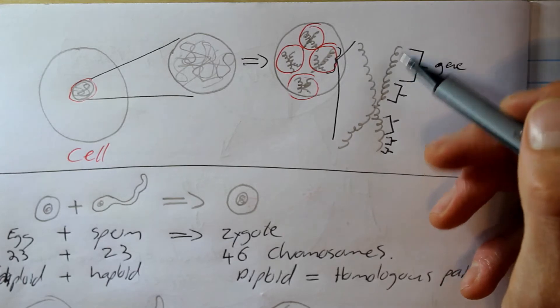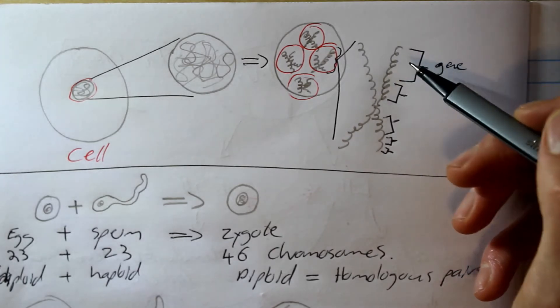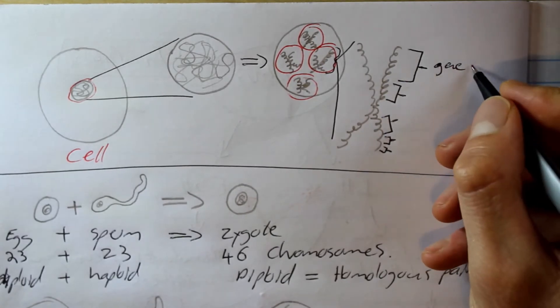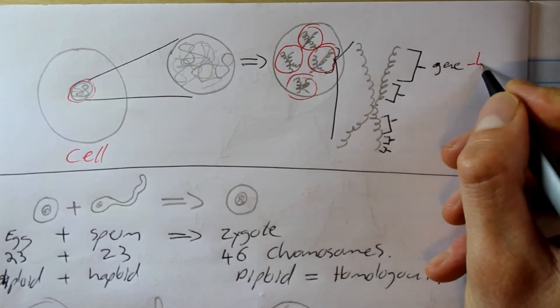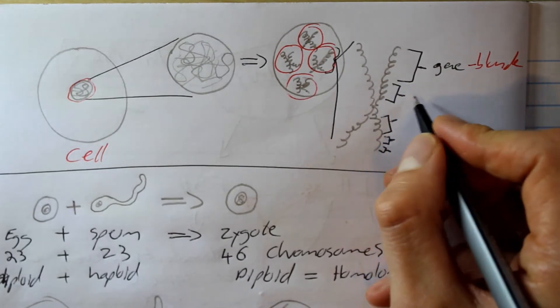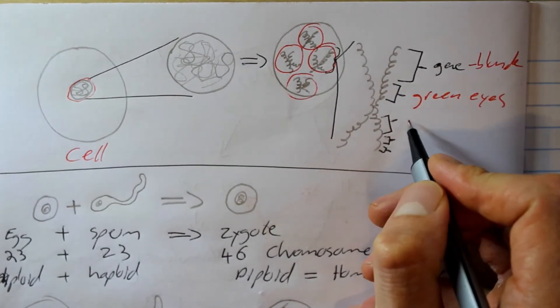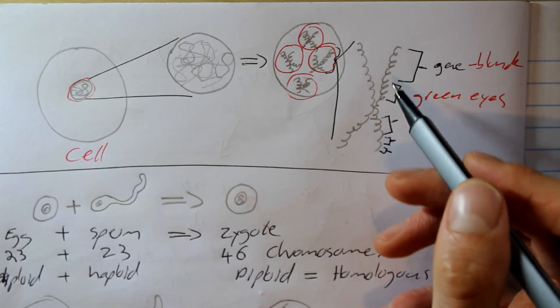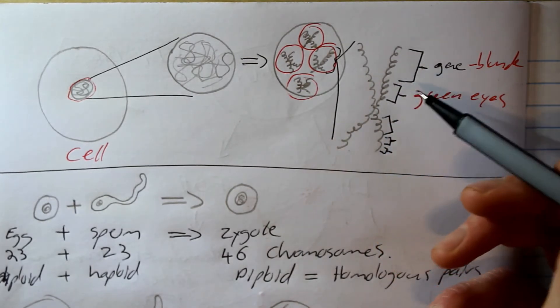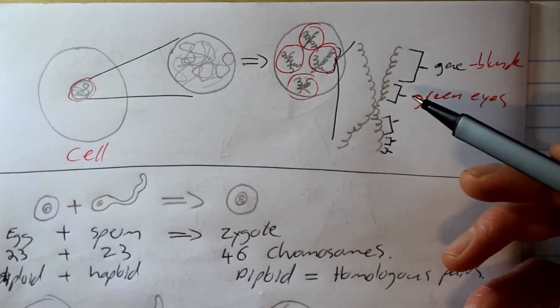On our strands of DNA, certain sections will code for certain genes. For example, this might be the gene for blonde hair, this might be the gene for green eyes, and so on. So along the strand of DNA, certain segments code for certain genes. Inside these is the genetic information that makes you, you.